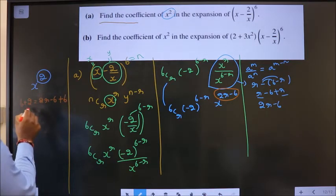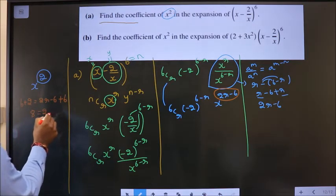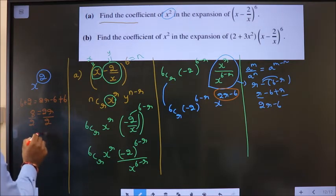So, 2 equal to 2r minus 6. Now, add 6. So, 8 equal to 2r. Divide by 2 now. So, r equal to 4.